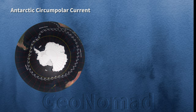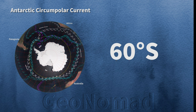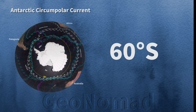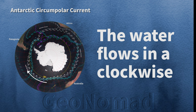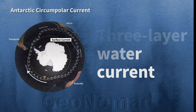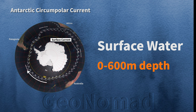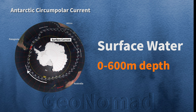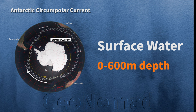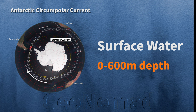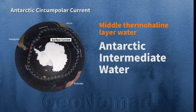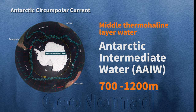First, let's look at the Antarctic Circumpolar Current. The region around latitude 60 south is the only part of the Earth where the ocean can flow around the world without land obstruction. The water surrounding Antarctica flows clockwise, both on the surface and deep below. The map displays the flow of ocean currents in three layers: surface water flow between 0 and 600 meters, which is the white line, circulating between the Drake Strait and the Tasman Sea. Another ocean current circulating Antarctica is the middle thermohaline layer water, flowing between 700 and 1,200 meters depth.